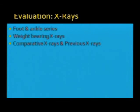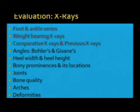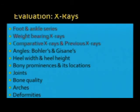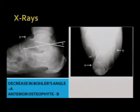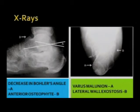Evaluate radiologically with a foot and ankle series — weight-bearing views, comparative x-rays, previous x-rays — and measure angles, width of the heel, height of the heel. Look at bony prominences and their location, position of the joints, arthritis within the joint, quality of bone, arches, and deformities. On x-ray you would see decreased Böhler's angle, anterior osteophyte, varus malunion, and a large lateral wall exostosis.